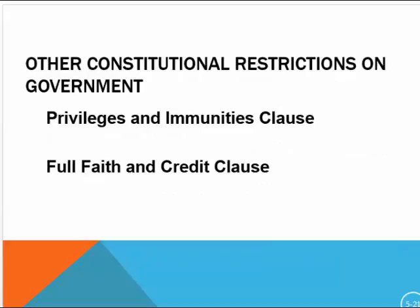Two important clauses for current-day struggles are the Privileges and Immunities Clause and the Full Faith and Credit Clause. The Privileges and Immunities Clause means when you go to Nevada you are not discriminated against as a California resident — you can get a job, remain a California resident for a certain period, buy property, and Nevada must afford you all the same protections and rights that Nevada residents have.